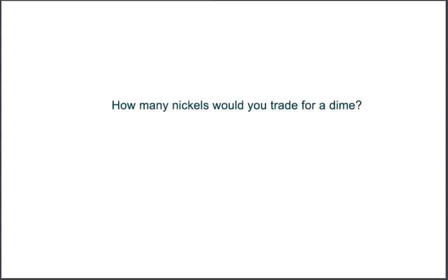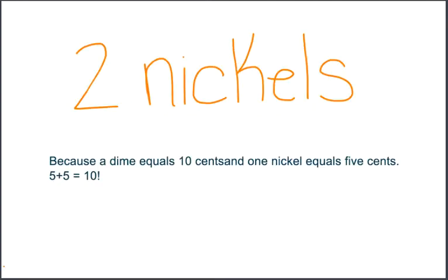How many nickels would you trade for a dime? Two nickels. Why? Because a dime equals ten cents. The value of a dime is ten cents. And one nickel equals five cents, so five plus five equals ten. One nickel plus one nickel equals ten, or one dime.